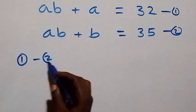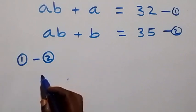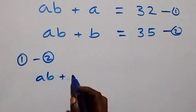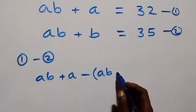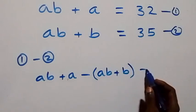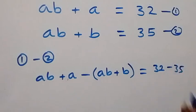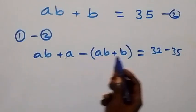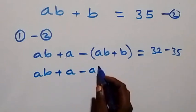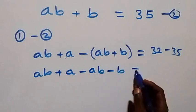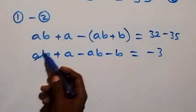Equation 1 minus equation 2: on the left-hand side, equation 1 has ab plus a, then minus that of equation 2 in brackets ab plus b, equals 32 minus 35. Opening the brackets we have ab plus a minus ab minus b equals minus 3.